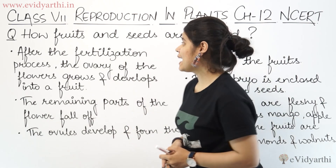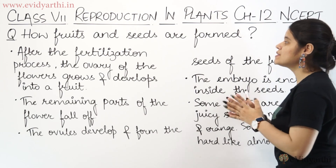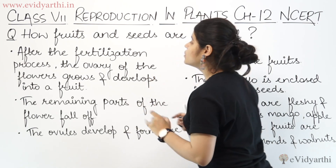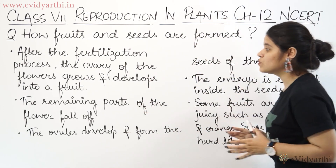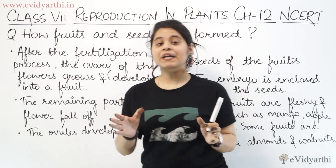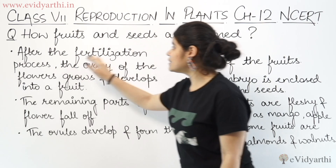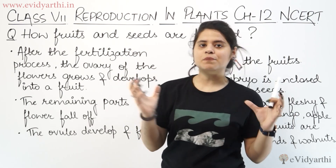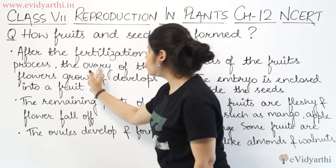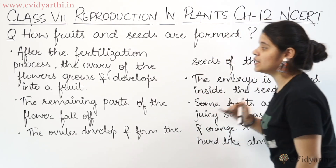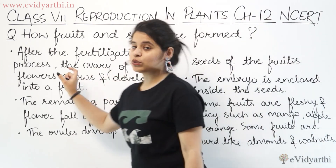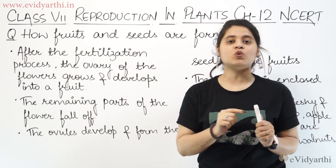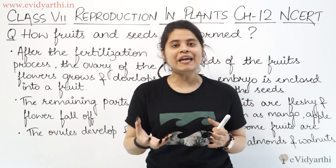The next topic is how fruits and seeds are formed. After the fertilization process, the ovary of the flower grows and develops into a fruit.